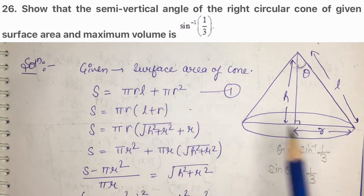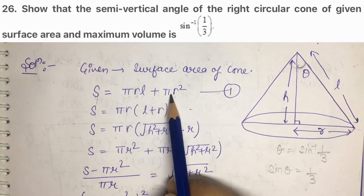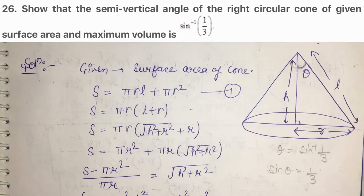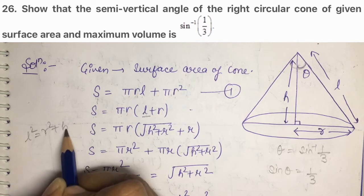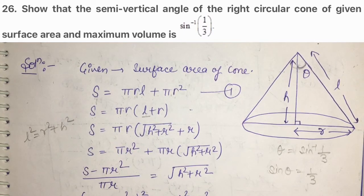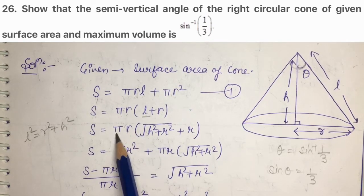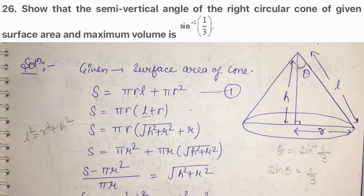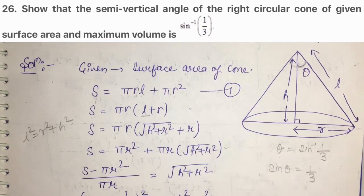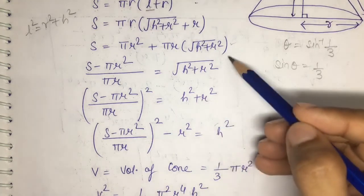Surface area of cone = curved surface area + area of the base circle = πrl + πr² = πr(r + l). Since L² = r² + h², we can substitute l = √(r² + h²). So S = πr² + πr√(r² + h²). We need to maximize volume, so we will use this surface area relation to eliminate a variable.